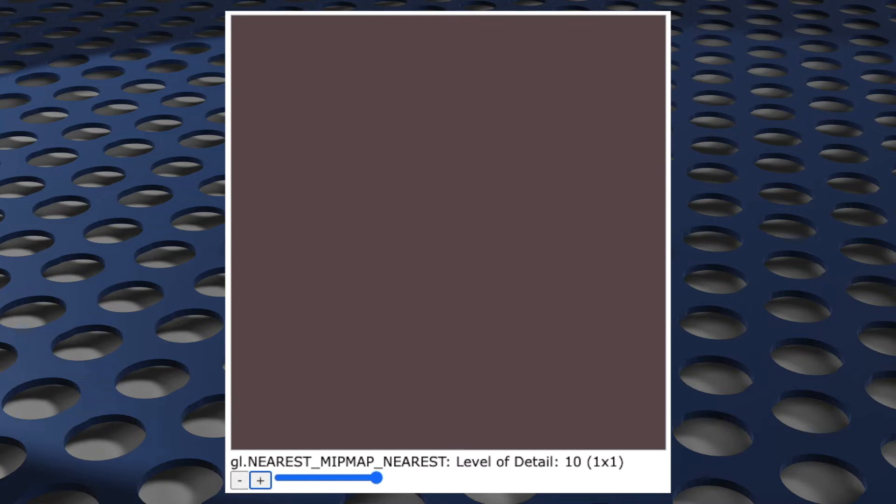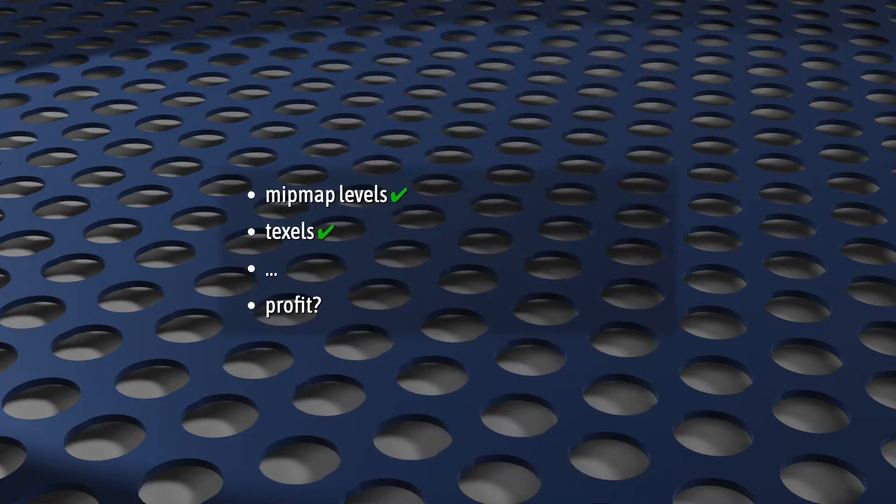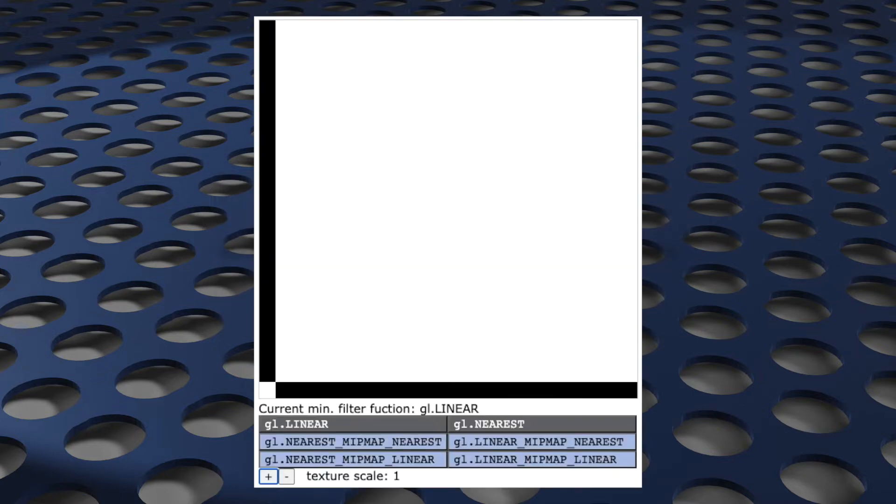Okay, great. So we have these levels and texels, but how are they used, and why does WebGL need them? For this, it really helps to look at what happens without mipmaps.